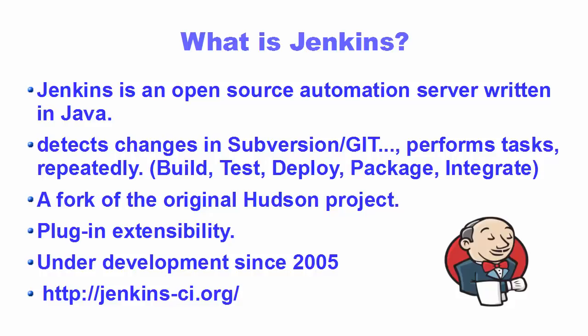What does Jenkins do? Jenkins is used to detect the changes that you commit using your version control system, such as Subversion or Git or any other versioning system, and it performs some tasks on your code when it detects changes. Jenkins can build your code, test your code, deploy your code, and even package or integrate your code whenever it detects changes in your version control system.